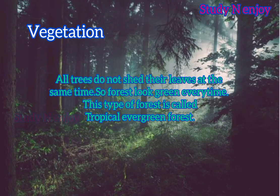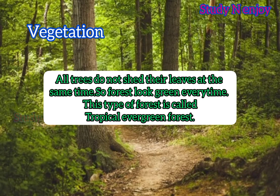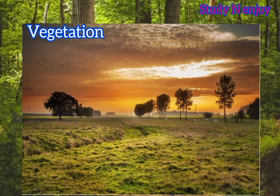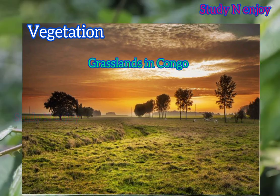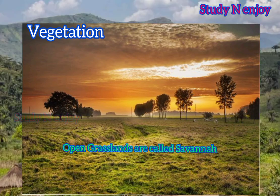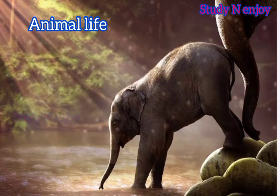In some parts of the DRC, the climate is not hot and wet, and the vegetation is also different. We can see a lot of grasslands in these areas. This type of open grassland is called savannah. We can also see a lot of animals in the forest.